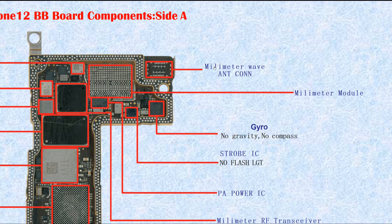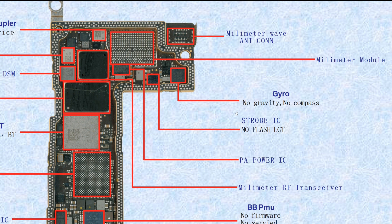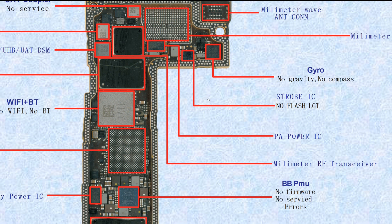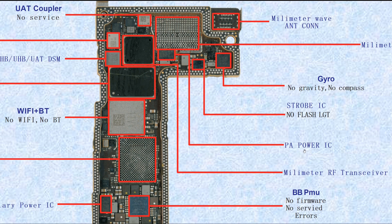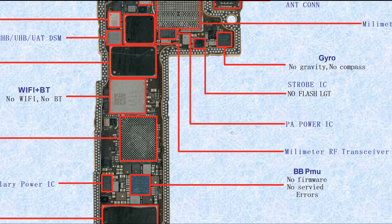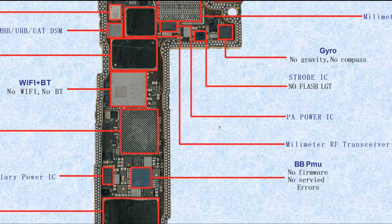This one is the millimeter wave antenna connector for 5G — the iPhone 12 5G uses millimeter wave. This one is the millimeter wave module — it has already been taken off here. This one is the gyro — if broken, it causes no gravity, no compass. This one is the strobe IC — if broken, it causes no flashlight. This PA power IC — if broken, it causes no service or searching. This one is the millimeter wave RF transceiver — if broken, it causes no 5G.